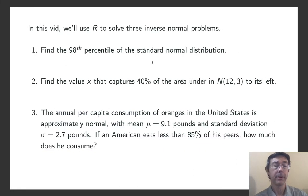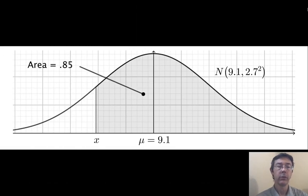Okay, let's go do problem three. The annual per capita consumption of oranges in the United States is approximately normal, with mean 9.1 pounds and standard deviation 2.7 pounds. If an American eats less than 85% of their peers, how much do they consume? So, let's have a picture of this one too.